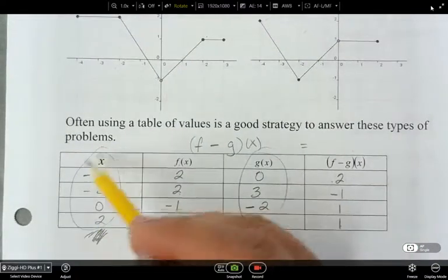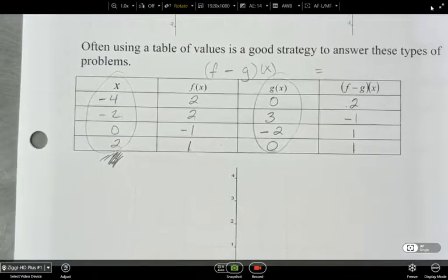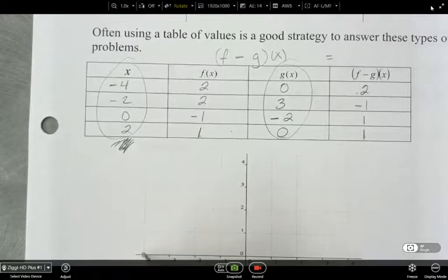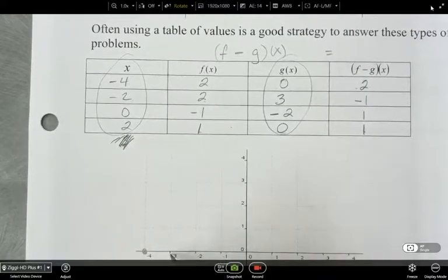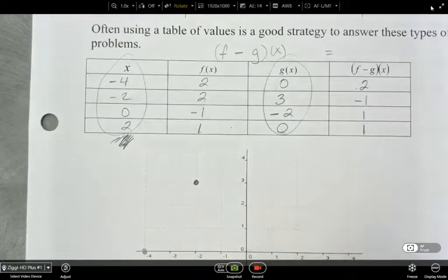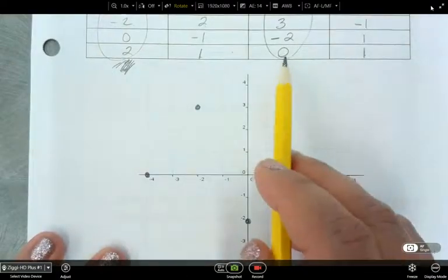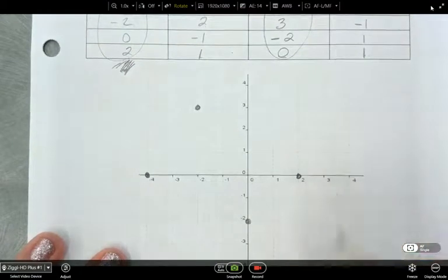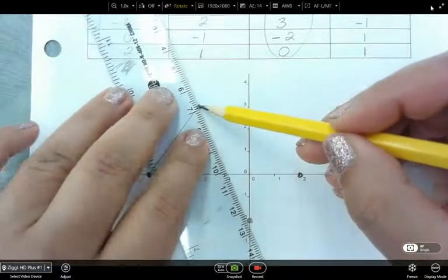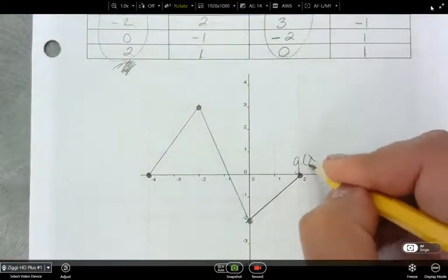All right. So, I've got all of those values now. I take these same x values, and then I can plot those on my graph, and that will give me which function, folks? G of x. That'll give me the graph of g of x. So, negative four and zero is right here. Negative two and three is right here. Zero and negative two is way down here. And then I've got two and zero, which is here. All right. So, now I'm going to connect these points. Okay. So, this is the graph of g of x.